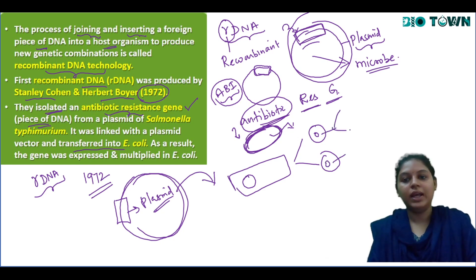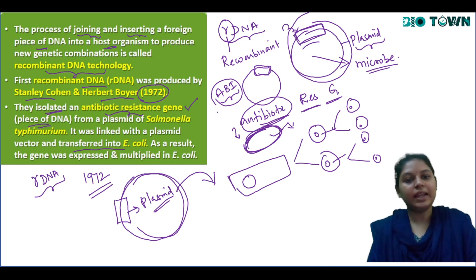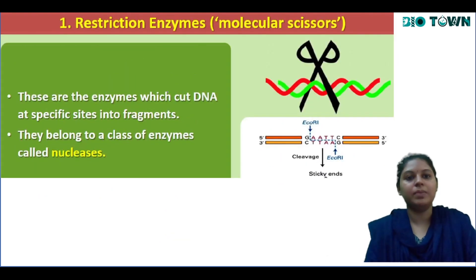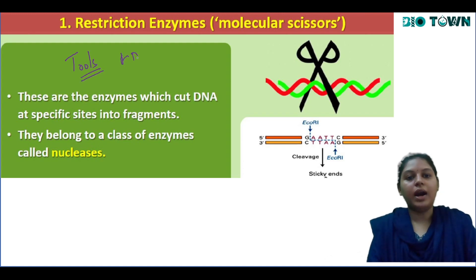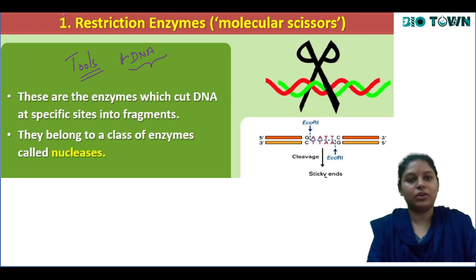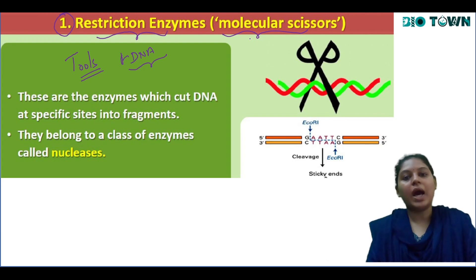When this E. coli undergoes binary fission, the same gene of interest along with the plasmid gets replicated, producing progeny. This specific technique is called rDNA technology — the introduction of a foreign DNA into an organism. Now we'll talk about the various tools of recombinant DNA technology.